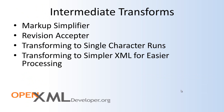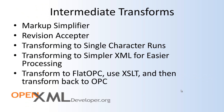The last important intermediate transform I'm going to talk about is transforming an OpenXML document to flat OPC. You can then use XSLT or other tools that can process plain XML, and then transform that XML back to OPC. Let me show you a bit about how that works.